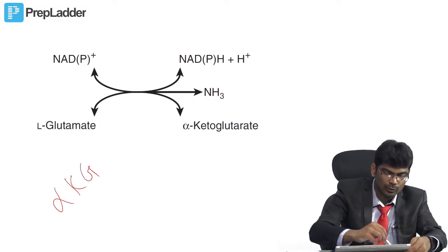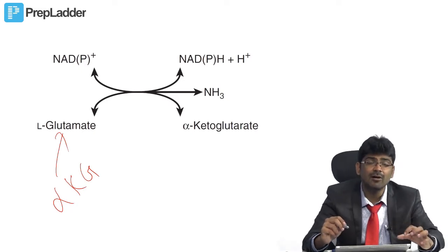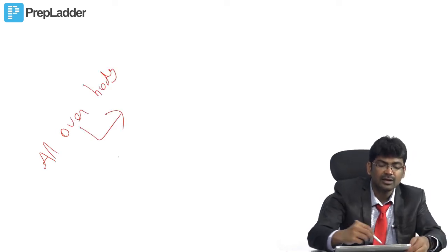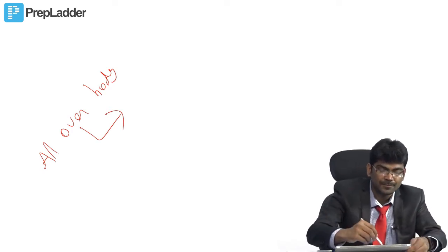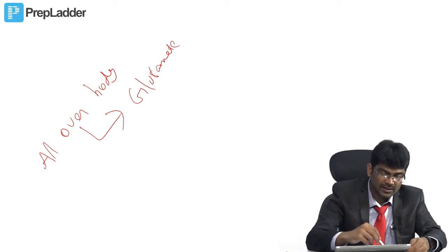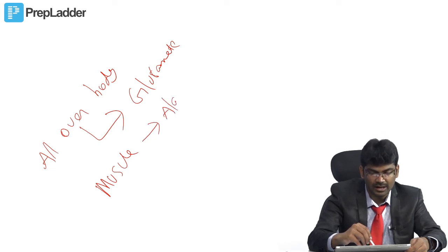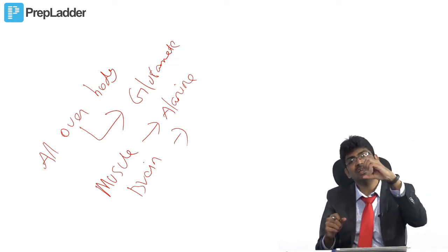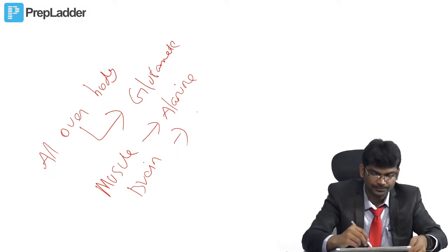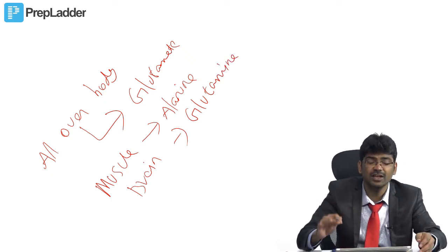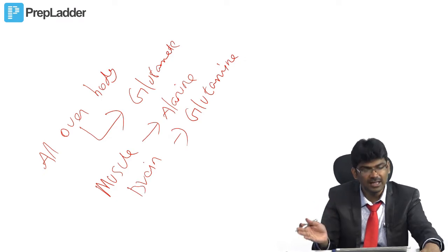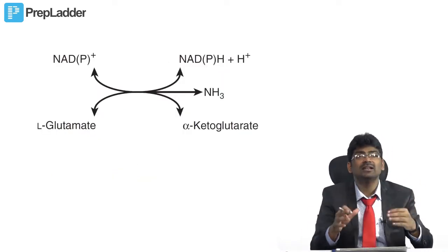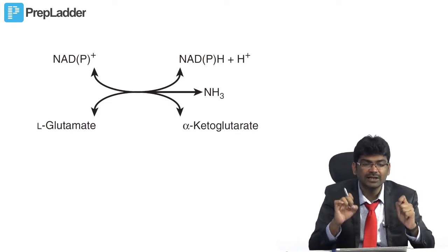Alpha-ketoglutarate collects the amino group, then it comes to the liver in the form of glutamate. If they ask which amino acid carries, transports, or detoxifies ammonia generally, the answer is glutamate. If they ask from muscle, the answer is alanine. In the brain, hyperammonemia is toxic, so glutamate takes one more ammonia to produce glutamine. Generally it is glutamate; from muscle, alanine; in brain, glutamine.